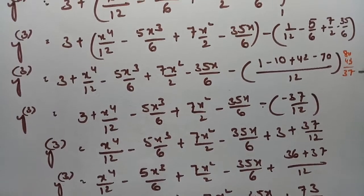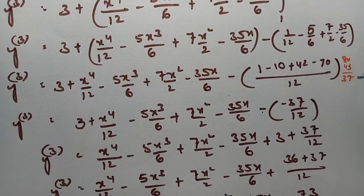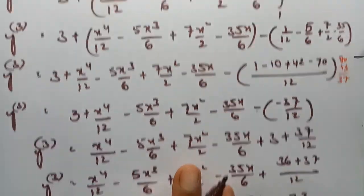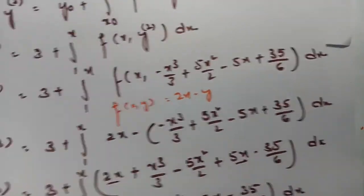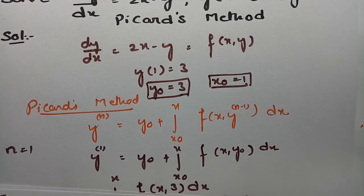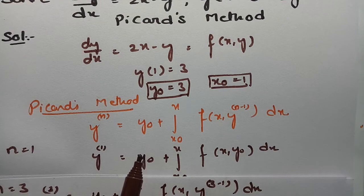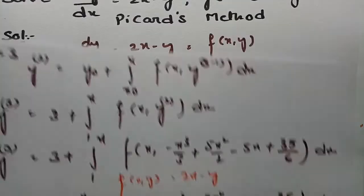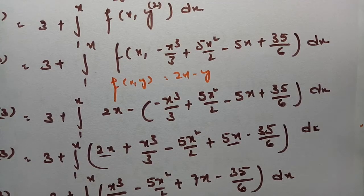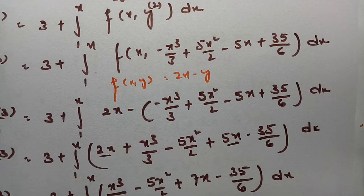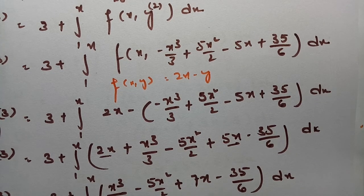So this is the final answer and we have calculated until the third approximation. To calculate the fourth successive approximation it is very tedious, so we stop here. This is how we solve by keeping n = 1, 2, 3 in Picard's method formula, and so on to get an exact y value. Thank you for listening, keep practicing daily, and please subscribe to this channel and share it with your friends.